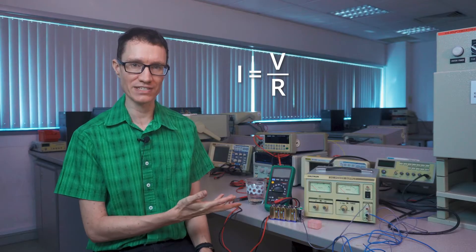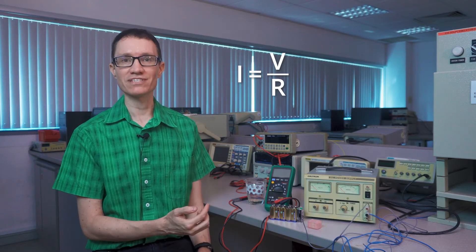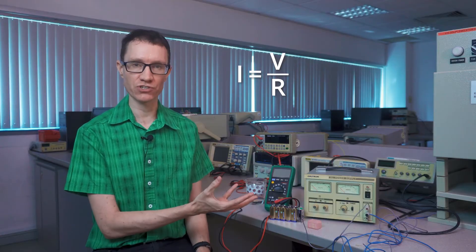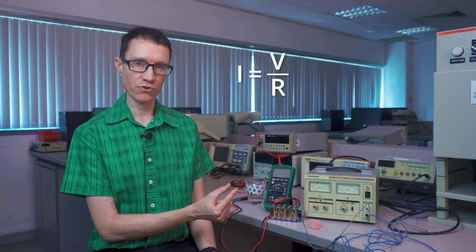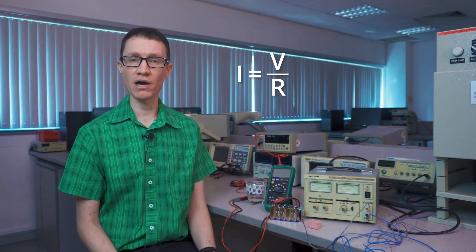Looking at the formula, we see that current is V over R. Obviously, if you have a higher voltage across your body, that can be very dangerous. The other variable in the formula is R, the resistance of the human body, and that's something that we're going to measure here in a moment.